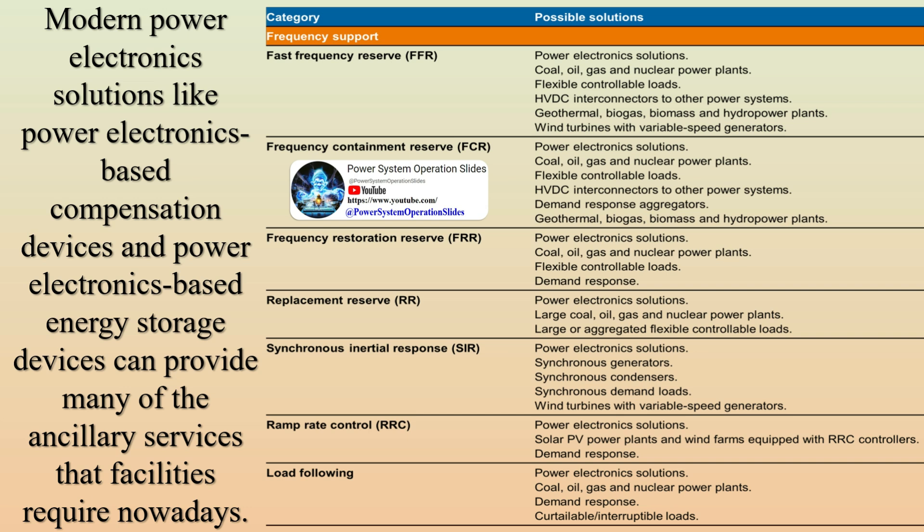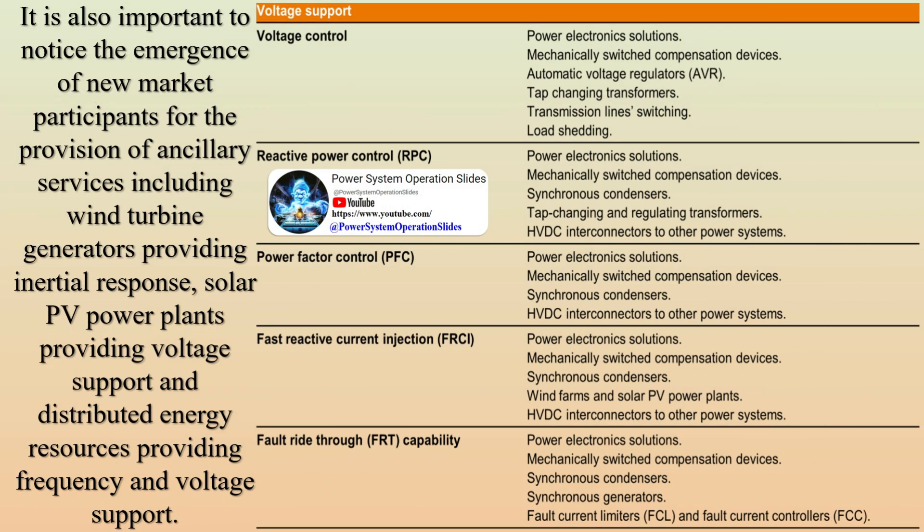MFRR, Manual Frequency Restoration Reserve, in its role as the tertiary frequency control, encompasses reinstating the primary and secondary frequency control reserves, managing congestion within the transmission network, and restoring both frequency and interchanges to their specified target values. MFRR, as the name suggests, is manually activated by grid operators, and it typically has a longer activation time compared to AFRR.